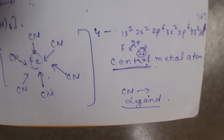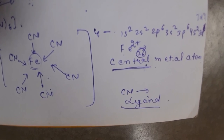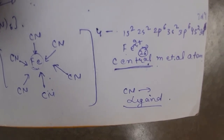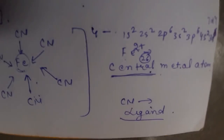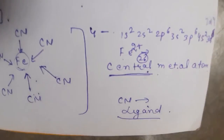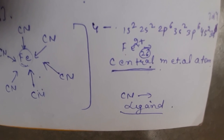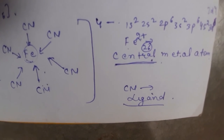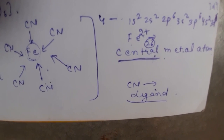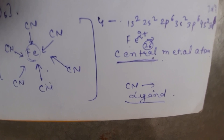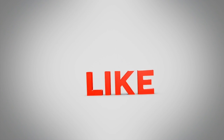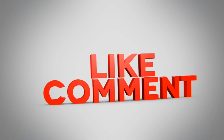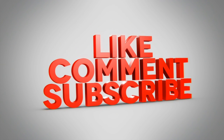If we talk about ligands, those which have a lone pair of electrons are called ligands. So this is the end of the lecture.